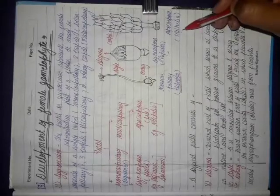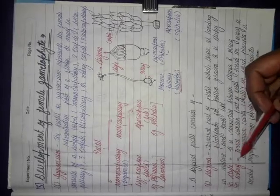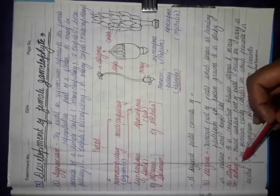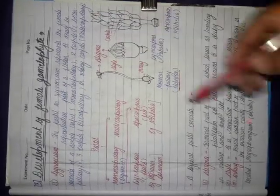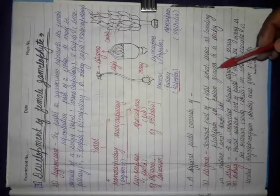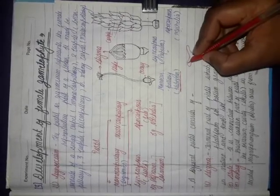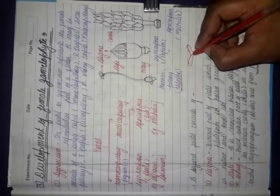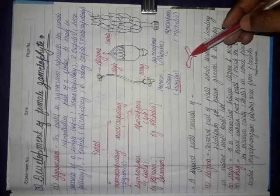Now, the parts of a typical gynoecium: there are mainly three parts. The first is the stigma, the second is the style, and the third is the ovary. The stigma is the terminal portion of a pistil and is the part that serves as a landing platform for the pollen grains. It is a knob-like structure.